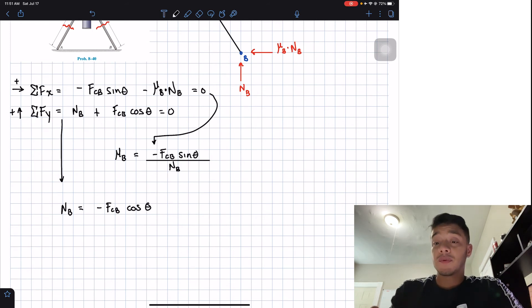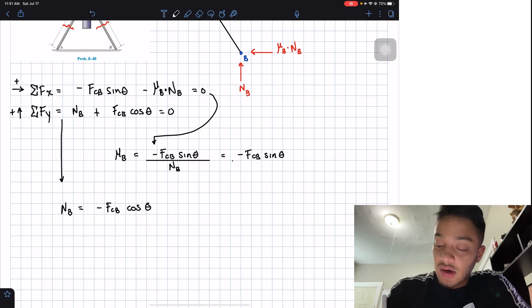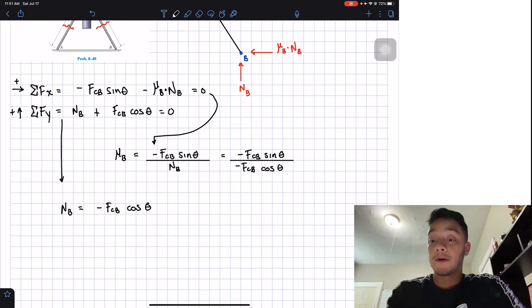Now, since we know this, all we're going to do is plug this NB into here. So we're going to put this here and we'll end up having negative FCV multiplied by the sine of theta all divided by negative FCV multiplied by the cosine of theta. We can cancel FCV with FCV negatives with negatives.